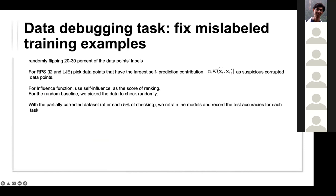The first experiment is a data debugging task to fix mislabeled training examples. They randomly flip 20 to 30 percent of data point labels. For the RPS method, they pick data points with the largest self-prediction contribution as suspicious corrupted data. For the influence function baseline, they use self-influence as the ranking score. There is also a random baseline, and they partially correct the dataset — after checking 5% of data, they retrain and record test accuracy.